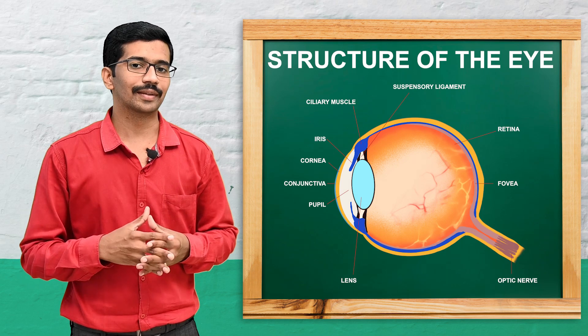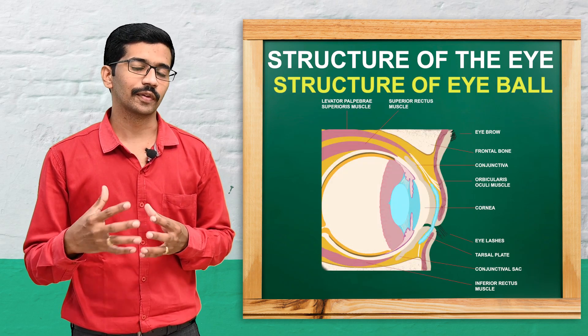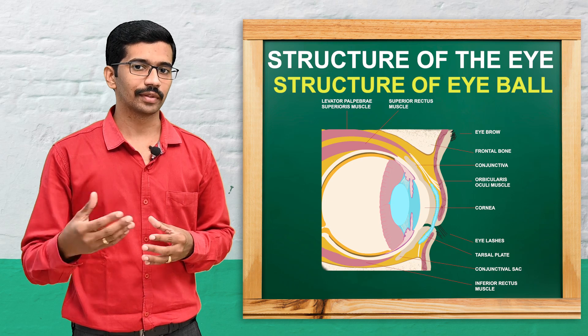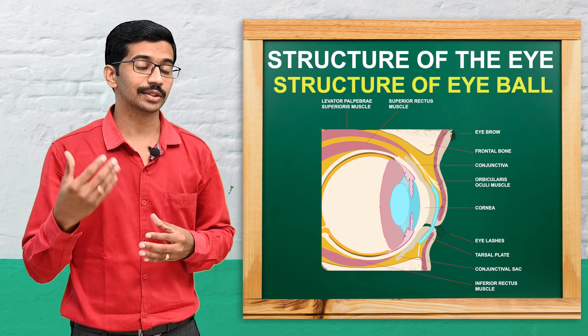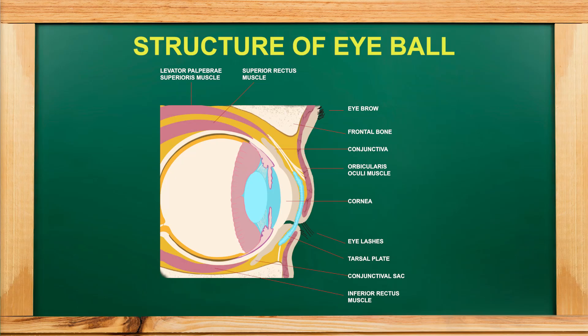Now we will go into detail regarding the structure of the eyeball. Anatomically, it has three different layers: the outer layer which contains sclera and cornea, the middle layer which contains the choroid, and the inner layer which is the retina.